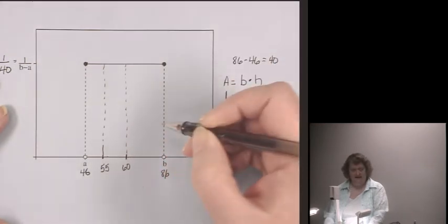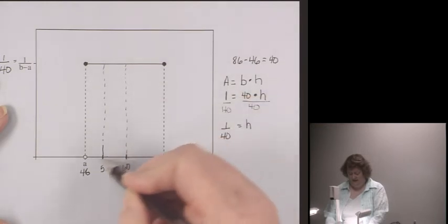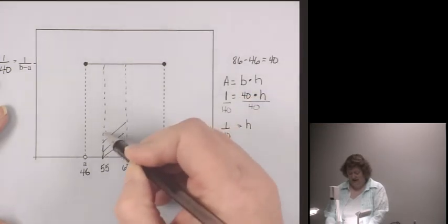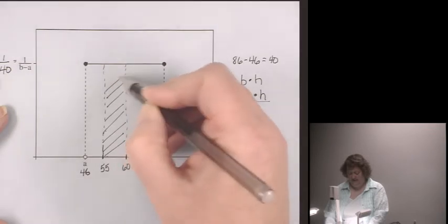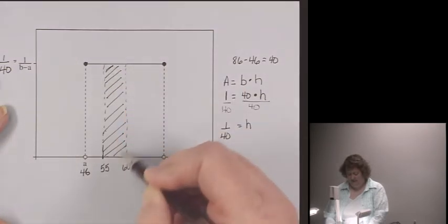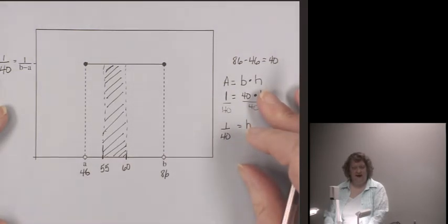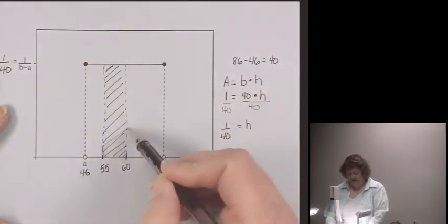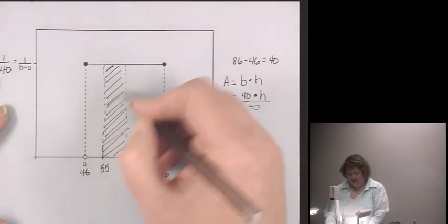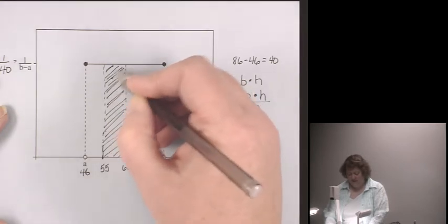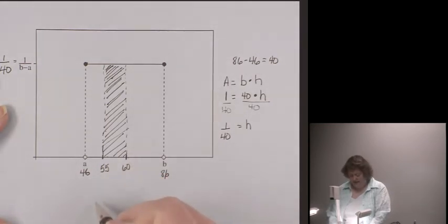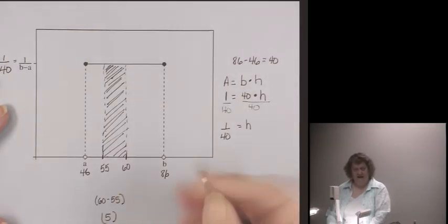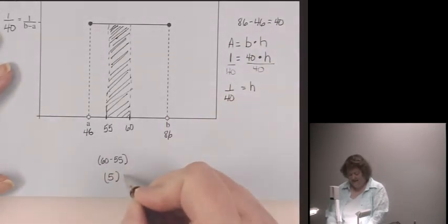And I'm going to draw my little lines between 55 and 60. And I want to find the area of this shaded part. And again, it forms a rectangle. Well, the base of this rectangle is 60 minus 55, which is 5.